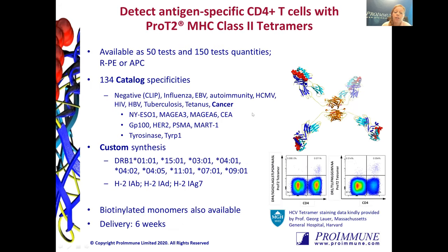For monitoring CD4 T cell responses, we have our class 2 tetramers, available with APC and PE in 50 and 150 test size quantities. We have 134 different catalog specificities, several of which are cancer-related, as you can see from the different cancer antigens listed. Just like the pentamers, we can also do custom synthesis, available for nine different class 2 alleles for human and three for mice. There's some example staining shown here from Professor Lauer's group from MassGen — quite bright and clean — and you'll be hearing more about this during the last talk today by Dr. Bartsch.